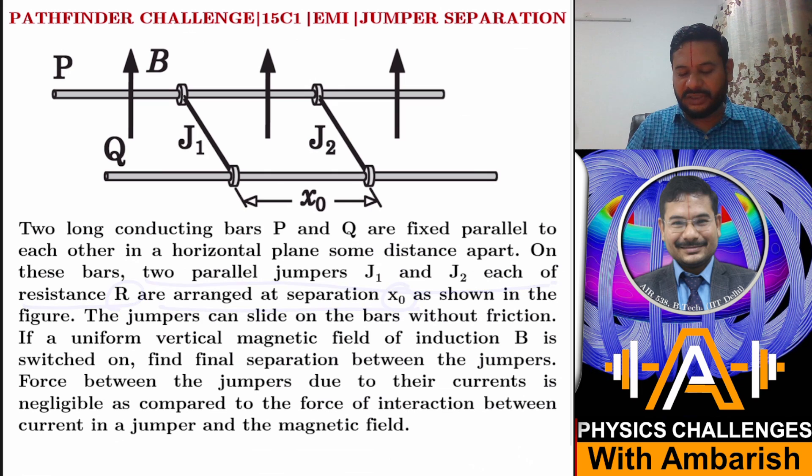Two parallel jumpers J1 and J2, each of resistance R, are arranged at separation x₀ as shown in the figure. Jumper you can think of as some sliding rod through which current can pass and it can slide on the long conducting rods. They're placed at separation x₀ and the jumpers can slide on the bars without friction.